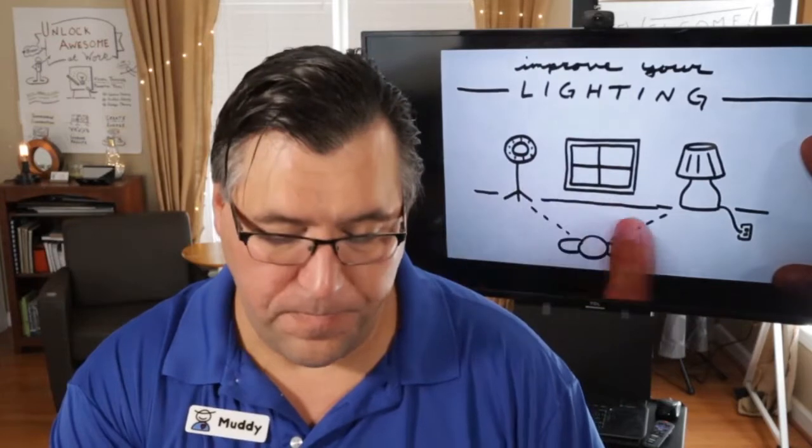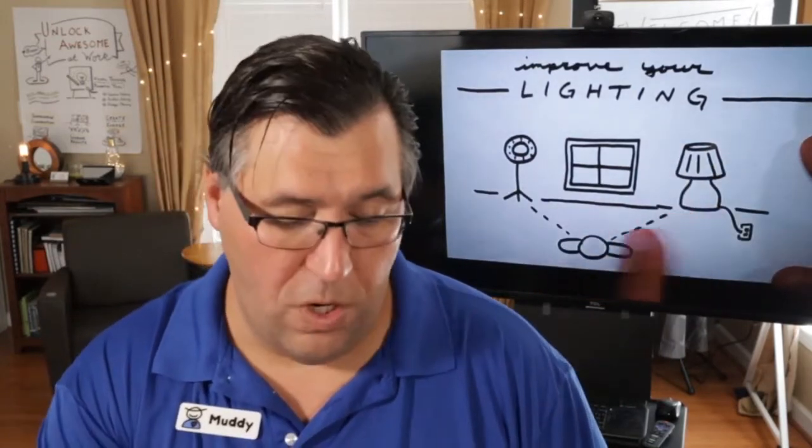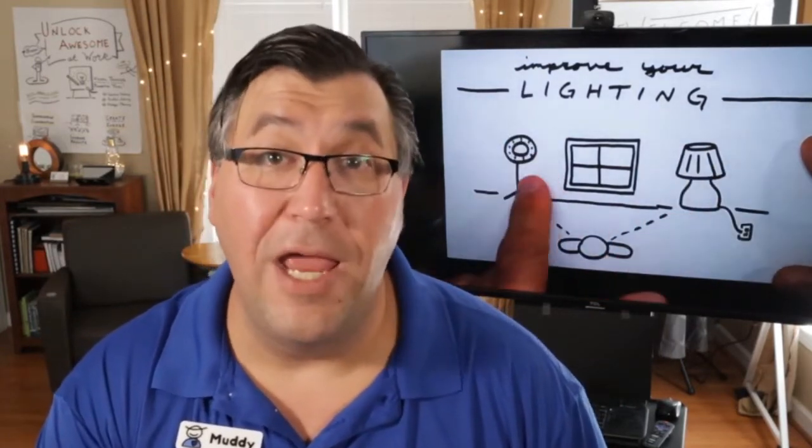If you don't have that situation, use a lamp or a ring light — a lot of people use ring lights for online video. Position them at about a 45-degree angle to the side and about 45 degrees up. If you wear glasses, you can see the reflection of the light, but when looking straight ahead with the lights up at a 45-degree angle, it doesn't create as much reflection on your glasses. So: enough light, from the right direction, and nice soft lighting.